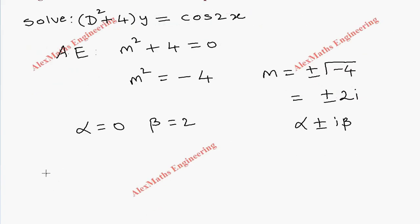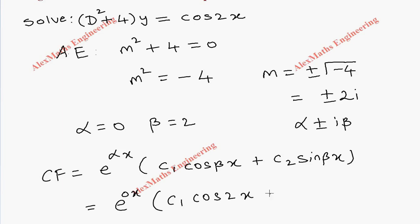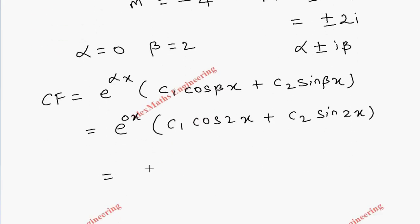As per the procedure, the complementary function is e^(αx) into c₁ cos βx plus c₂ sin βx. So e^(αx) is nothing but e^(0x) into c₁ cos 2x plus c₂ sin 2x. Anyway, e^(0x) is 1, so we get c₁ cos 2x + c₂ sin 2x. So we completed the complementary function.